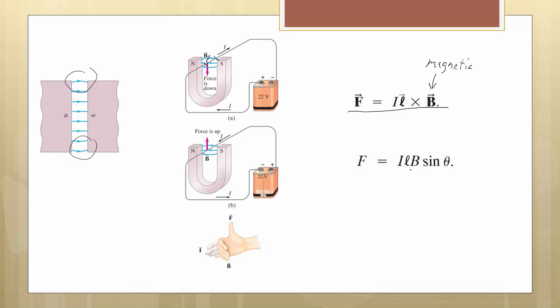As far as actually doing the calculation, cross products can also be written as the two magnitudes times the sine of the angle between the two vectors, so this is probably what you're going to be using most. What this tells us as well is that you get the biggest force when the current is perpendicular to the magnetic field. If they're parallel, then this force goes to zero.